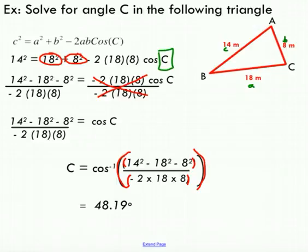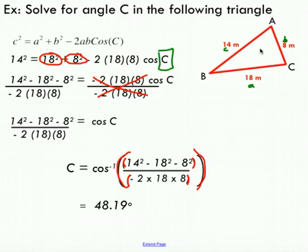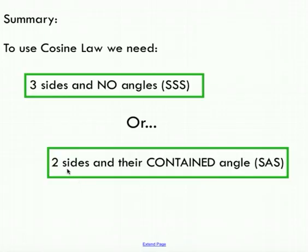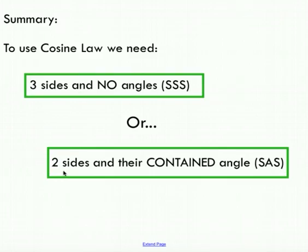One of the confusing things about the sine law and cosine law is knowing when to use which. I find the cosine law is very easy to identify. If you're given three sides and you've got no angles, that screams cosine law. Another situation is where you have two sides and their contained angle. This is sometimes referred to as side angle side. That was the first situation we looked at where we had a side, an angle, and a side. Notice that the angle is contained within two sides. That's a red flag that you need to use the cosine law.